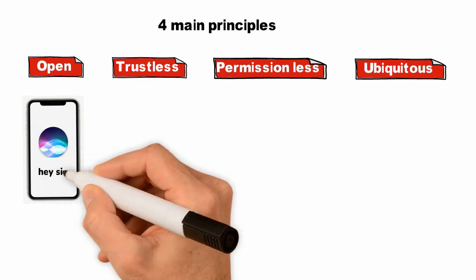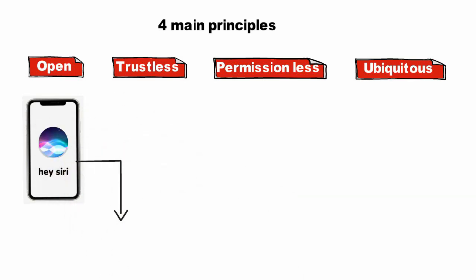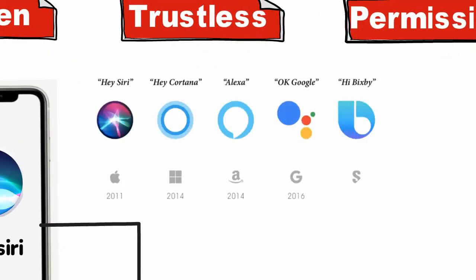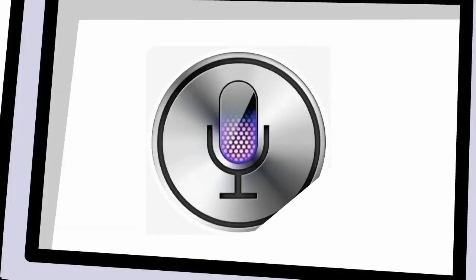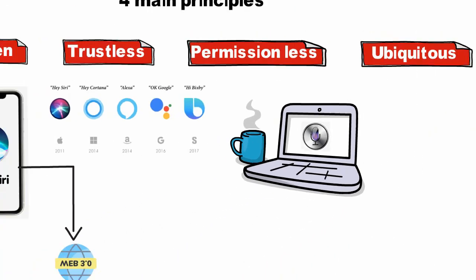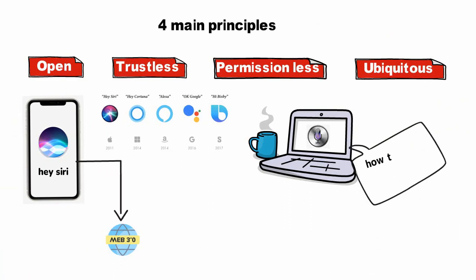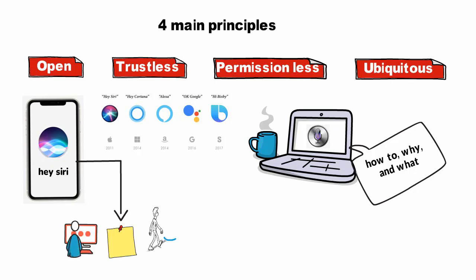Apple's Siri is a perfect example of a key component of Web 3.0. Using this technology, Siri and other personal assistants communicate, share information, and provide users with more helpful search results for every meaningful query — including how, why, and what.